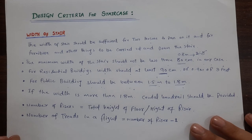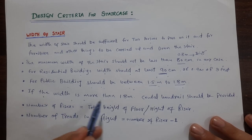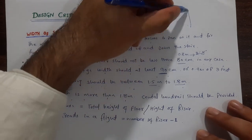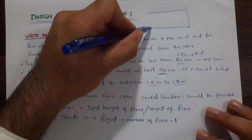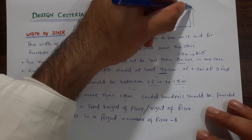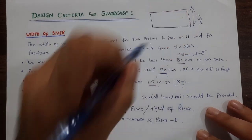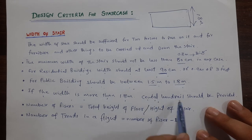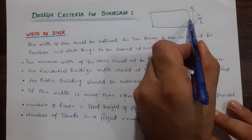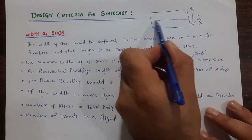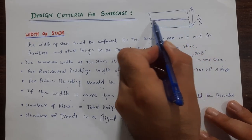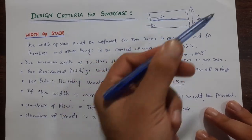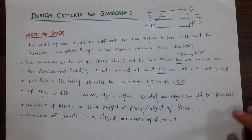If the width of the staircase is more than 1.8 meters, then a central handrail should be provided. This allows people to use it on both sides when going to the first floor, second floor, and so on.